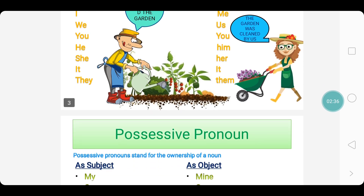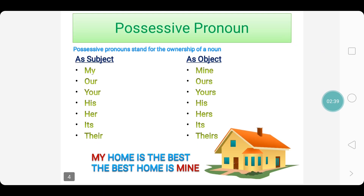Let us have a look at possessive pronouns. Possessive pronouns stand for the ownership of a noun — that is, something belongs to someone. These possessive pronouns are also used as a subject and as an object. When a possessive pronoun is used as a subject, it is used as: my, our, your, his, her, its, their.